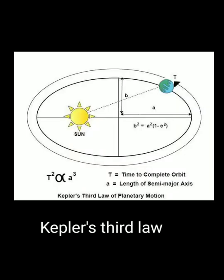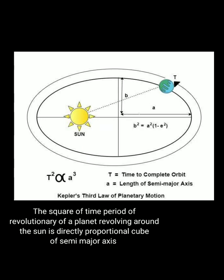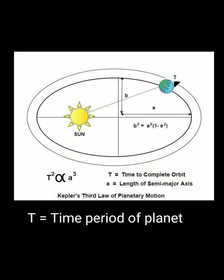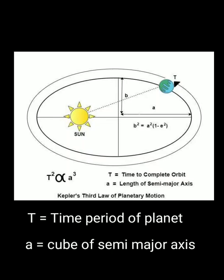Kepler's third law: the square of the time period of revolution of a planet revolving around the sun is directly proportional to the cube of the semi-major axis. T² ∝ a³, where T is the time period of the planet and a is the semi-major axis.